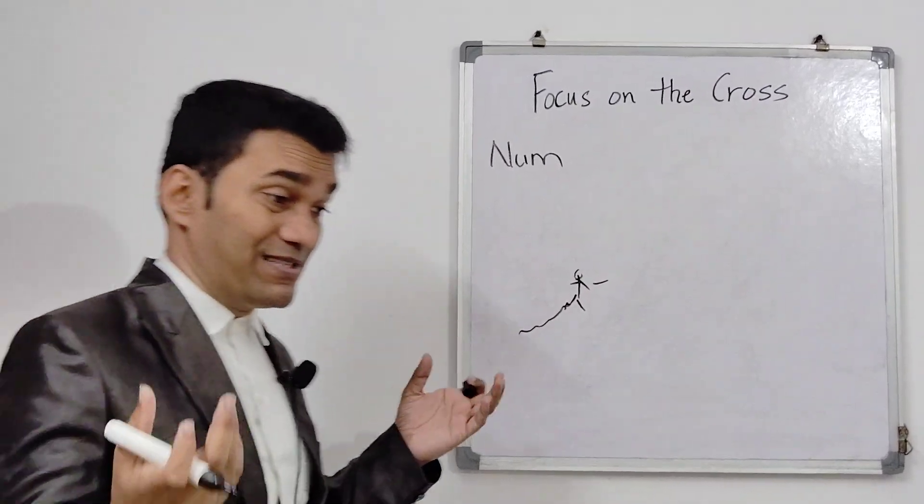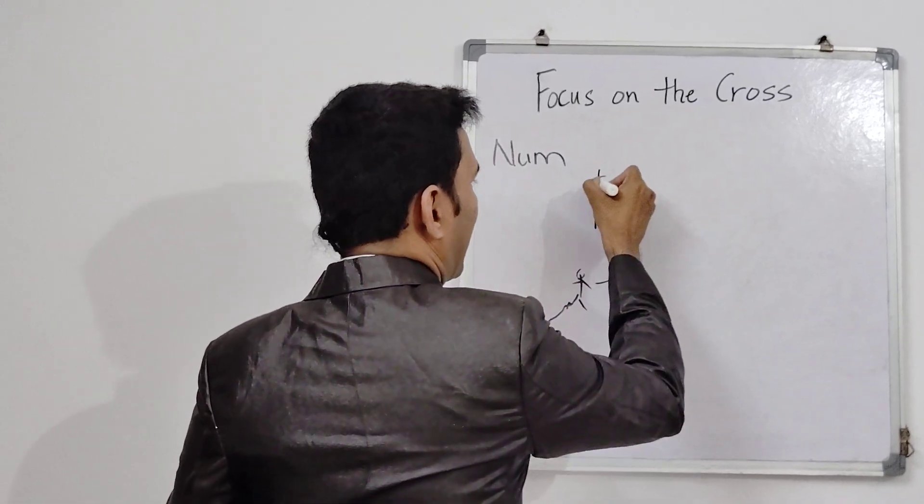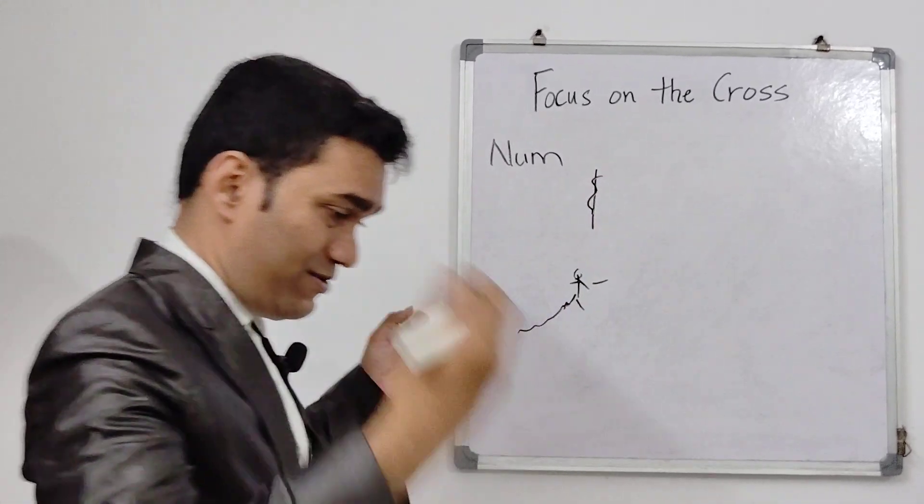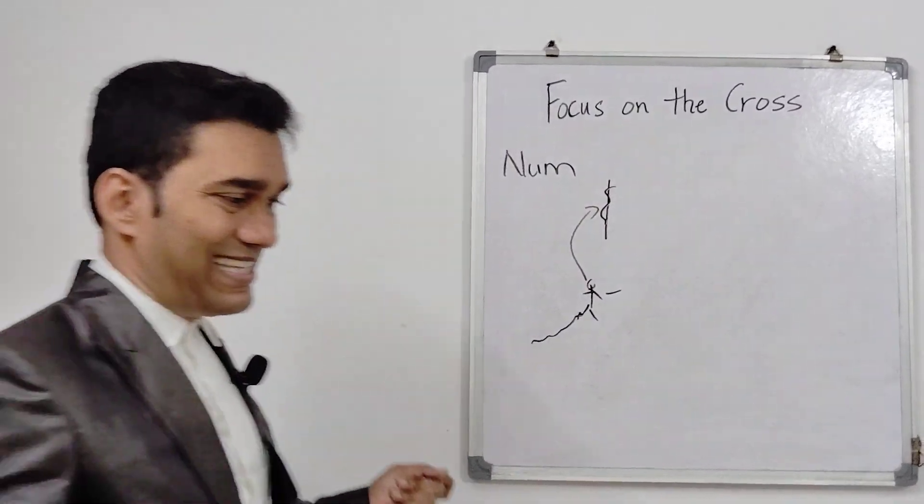Like, Moses, please help us. So when Moses told them to create a pole and put up a bronze serpent, he said whoever just sees this thing will get healed.